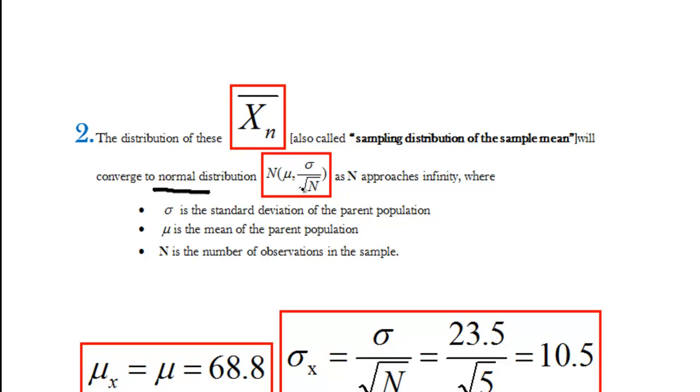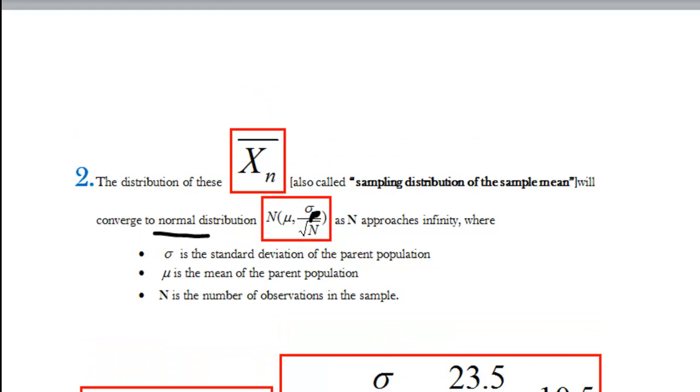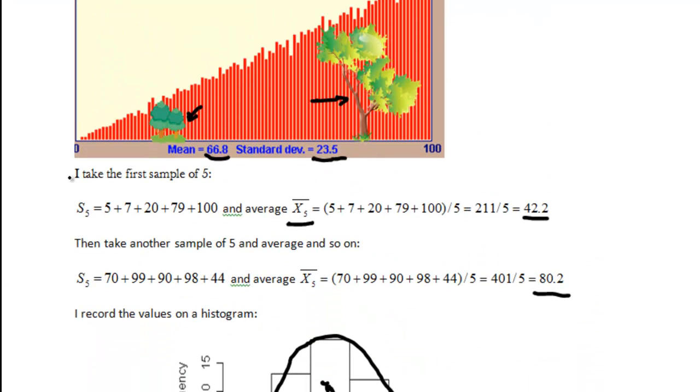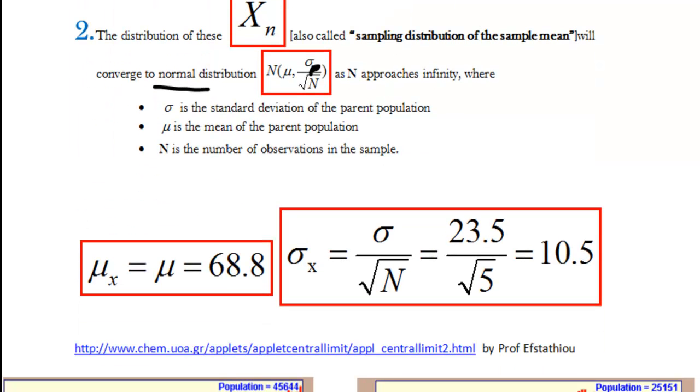and standard deviation equal to standard deviation of the population divided by square root of n where n is standing for number of observations in the sample size. It's not the total observations, it's just the number of observations in the sample size and I'm sure you recall we had five observations in our sample size. Let's prove it.